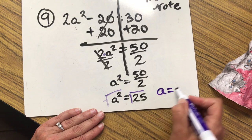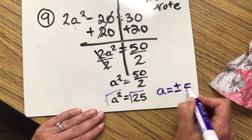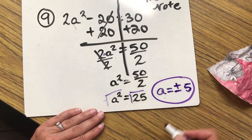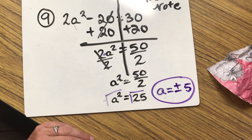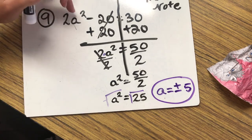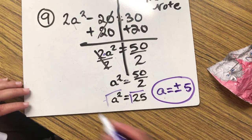So I'm going to be left with A equals plus or minus 5. Those are my zeros, my roots, my intersection points. And if I plug in 5 into the original, it does work.